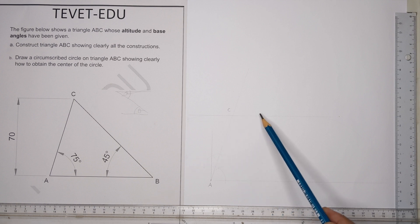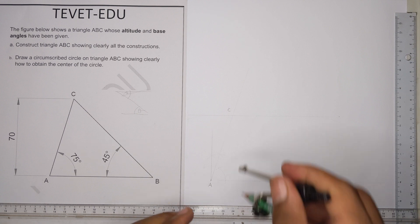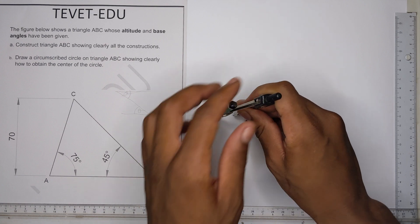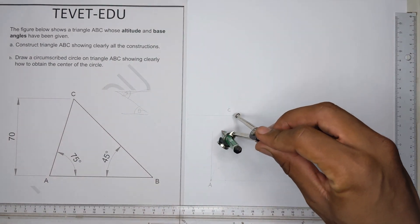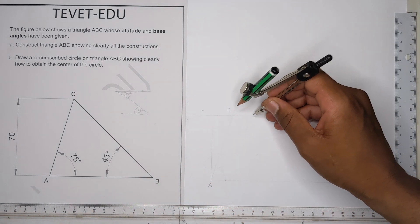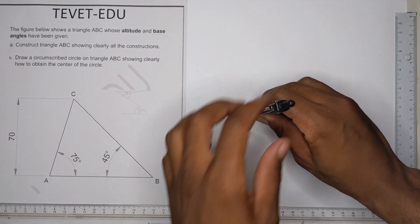Again, you get your compass, open it to any convenient radius, place it at point C, then you construct angle 45. From that point...